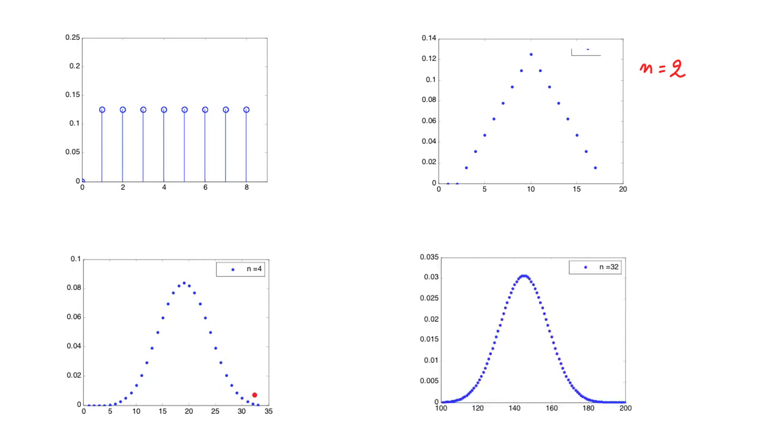And if you take as many as 32 of them, then the PMF of the sum of 32 discrete uniforms is almost identical to the shape that you would get if you were to draw a normal PDF.